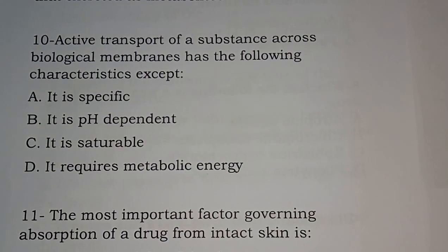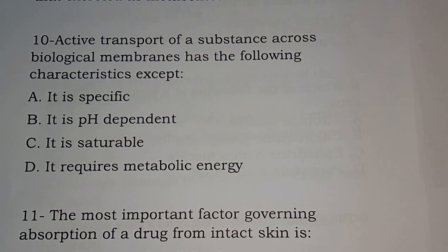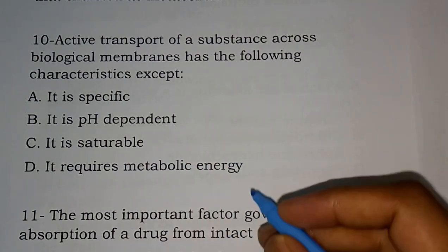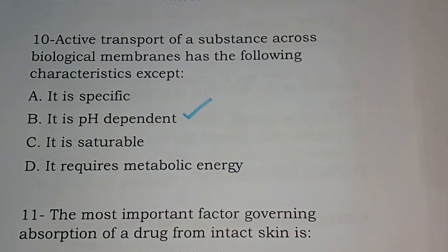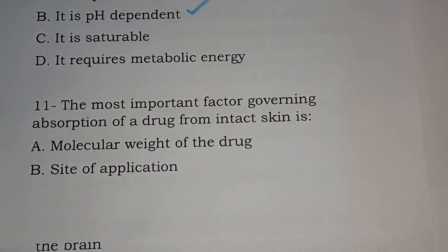Question number ten: active transport of a substance across a biological membrane has the following characteristics, except — it is specific; it is pH dependent; it is saturable; it requires metabolic energy. Except option B, all are correct regarding active transport. The correct answer is option B — active transport is not pH dependent.